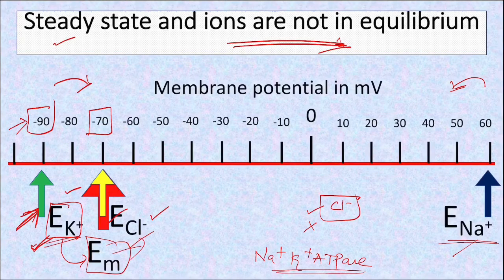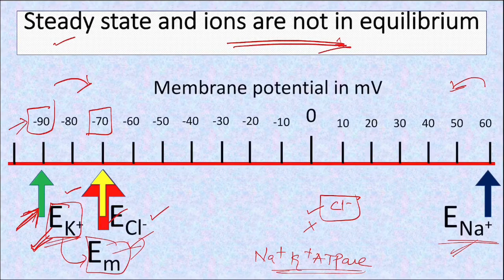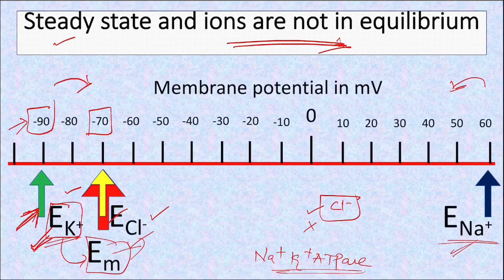We can imagine this as a tug of war between the ions, where the strength of their pulling is decided by the permeability of the ions. The ion with the highest permeability pulls the membrane potential towards its equilibrium potential. Impermeant ions do not contribute to the magnitude of the membrane potential — if an ion's permeability is zero, we can remove it from the equation.